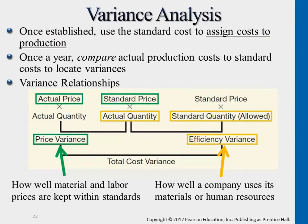Since we know that this part is not related to sales volume — because we already set the flexible budget sales volume the same as the actual results — we want to know in more detail: is it because of price variance, where the unit cost that actually occurred is different from the standard cost we budgeted? Or is it because of efficiency variance, meaning that for a product we expected to use perhaps three square feet of vinyl but ended up using five square feet? Or, like baking a cake, we expected to use five pounds of flour but used seven pounds instead. That's related to efficiency variance.